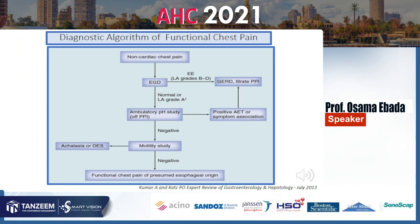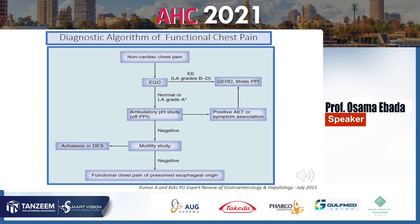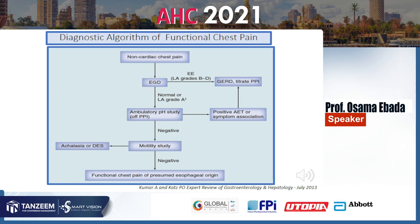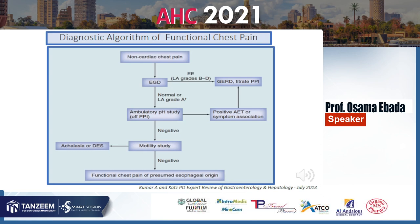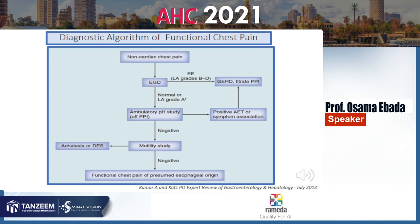In the algorithm for non-cardiac chest pain: endoscopy showing LA grade B to D indicates GERD — titrate PPI. If the endoscopy is normal or grade A, perform off-PPI pH metry. If there is positive acid exposure time, the patient has NERD and is treated accordingly. If negative, do motility testing. If positive, diagnose achalasia or diffuse spasm. If motility is also negative, the diagnosis is functional chest pain.